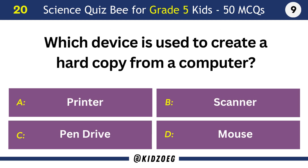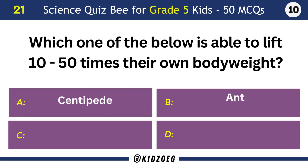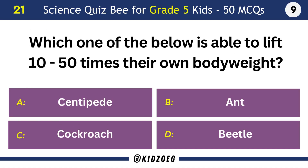Which device is used to create a hard copy from a computer? Printer. Which one of the following is able to lift 10 to 50 times their own body weight? Ant.